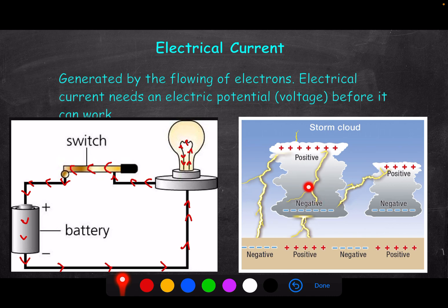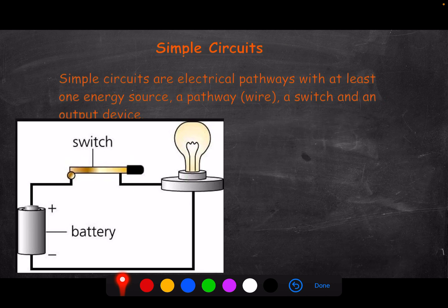Lightning can also work within clouds or between clouds, from negative to positive charges. Interestingly, lightning can even go from the ground to the cloud — something counterintuitive. A lightning bolt can actually start from the ground, with electrons flowing from the ground into the cloud, because static is forming on the ground and is attracted to the cloud. So lightning can come from both the ground and the sky.